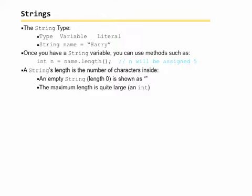The name of the data type is string with an uppercase S indicating it's a reference type, followed by the name that we want to use for the string, followed by the equal sign, and double quotes around a string literal. Notice in our example there that third bullet point, string name equals Harry, that should have a semicolon at the end to denote the end of the statement.